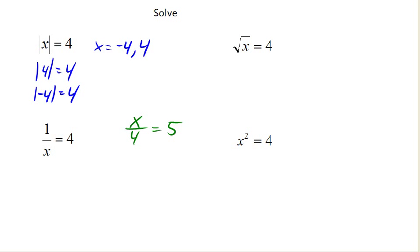You might remember in a problem like this, we multiplied both sides by 4. The idea being that then this reduces down to just x equals 5 times 4 is 20, right? Because this ends up being x over 1 is x.